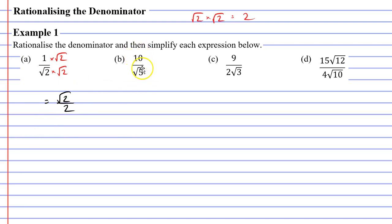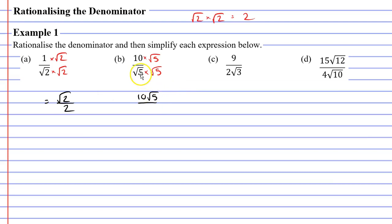This time, our denominator is the square root of five, and we want to make this a whole number — we want to rationalize the denominator. So, we're going to multiply root five by itself, because the square root of five times the square root of five is just five. Although, if I do this, I have to multiply the numerator by the square root of five as well. Ten times the square root of five is just ten root five.